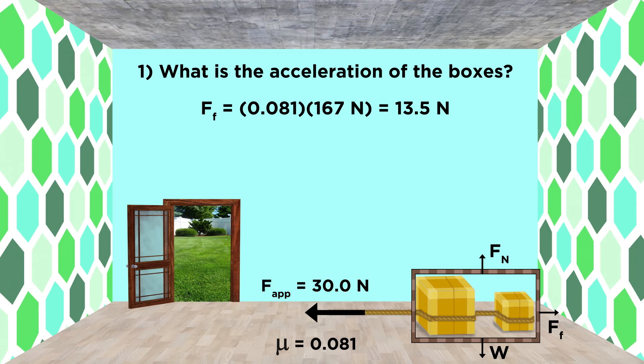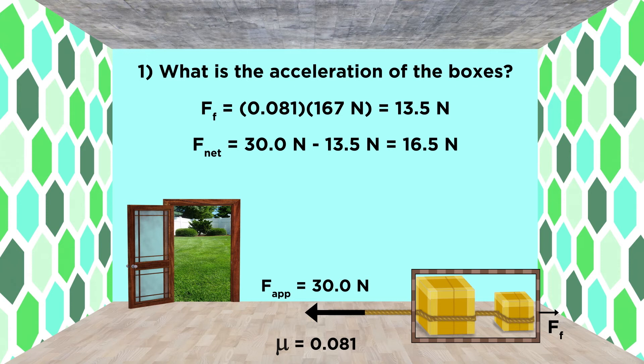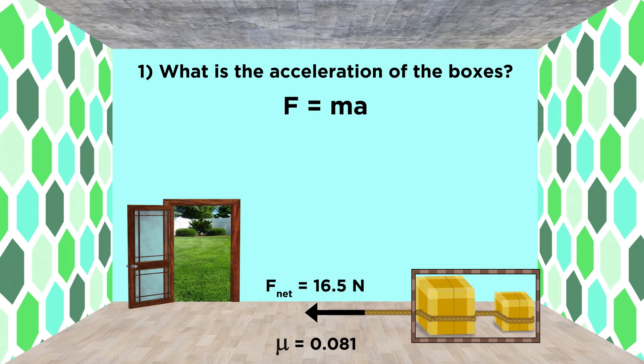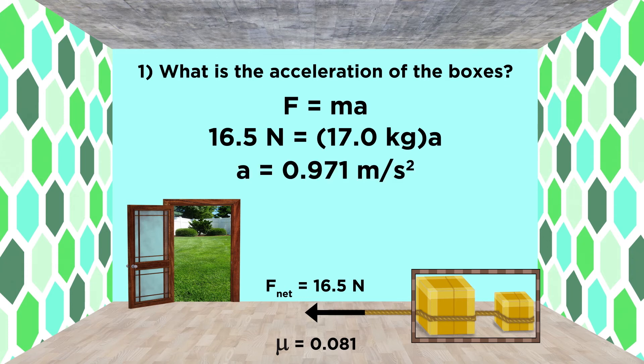To get the net force, we see that the vertical forces cancel out, so we just take the thirty newtons in the positive direction, subtract the thirteen point five newtons in the negative direction, and we get sixteen point five newtons as the net force in the positive direction. Now it's just F equals MA. We have sixteen point five newtons, the seventeen kilogram combined mass, and we solve for acceleration, which will be zero point nine seven one meters per second squared.